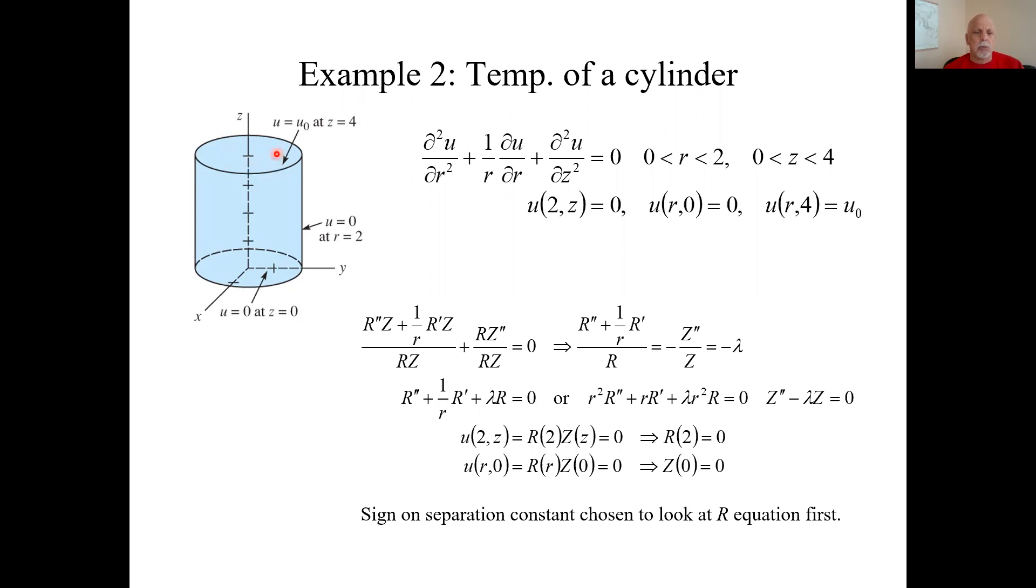We also assume radial symmetry. And take my word for it, this is the governing partial differential equation in cylindrical coordinates. Actually, theta doesn't even come into play here because we assume radial symmetry. The temperature is held at zero at the bottom and around the sides. And it's some constant temperature u_0 up at the top.